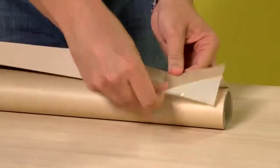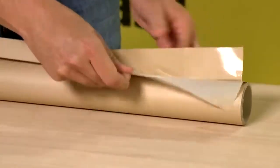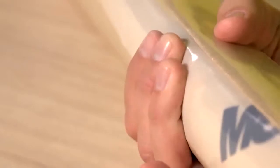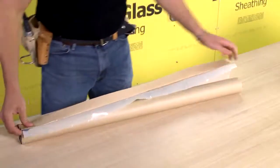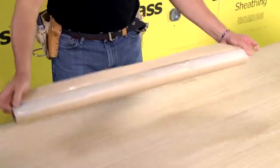Peel back the release liner to expose the adhesive to form a starter strip across the membrane. The very aggressive adhesive sticks to many surfaces, so be careful when aligning the membrane on the wall since repositioning may be challenging.